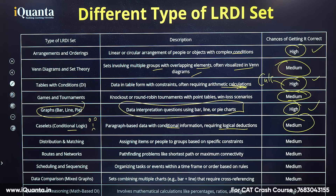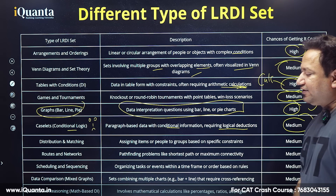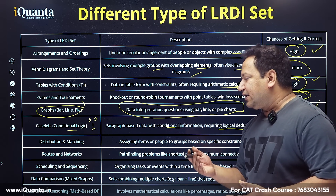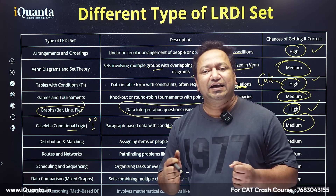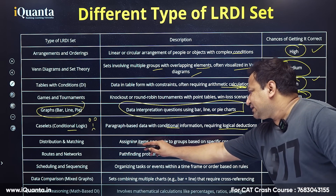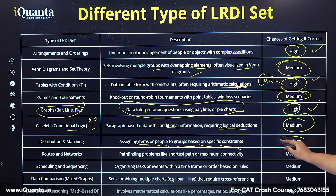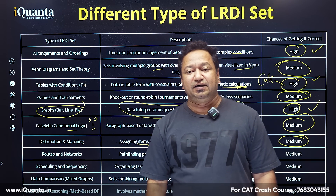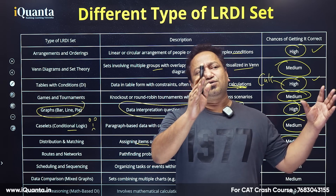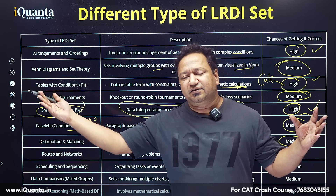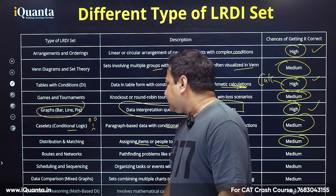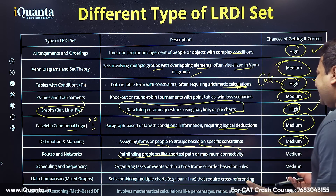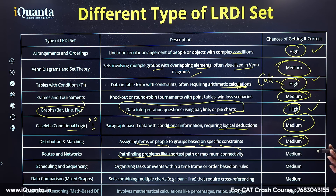Distribution and matching involves assigning items or people to groups based on specific constraints — the probability of getting it correct is medium. Routes and networks is something seen in last year's CAT paper as well. It is a topic where lots of conditions can be added to make it difficult, so it's also medium.